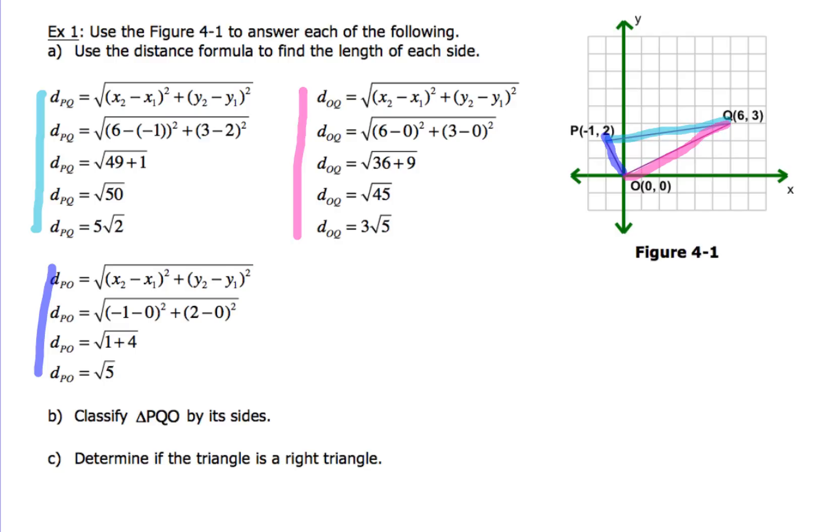Classify triangle PQO by its sides. Now if we take a look at each one of my segment lengths for PQ, OQ, and PO, all of those are different. And if a triangle has three different side lengths, well, we just learned that that means a triangle is going to be scalene. So make sure you write this sentence down in your notes, just the way that I have it there.